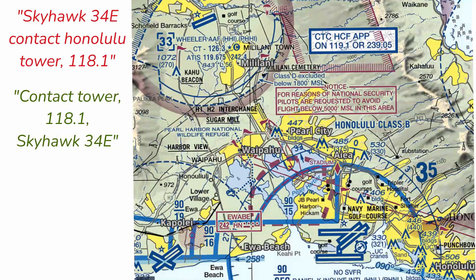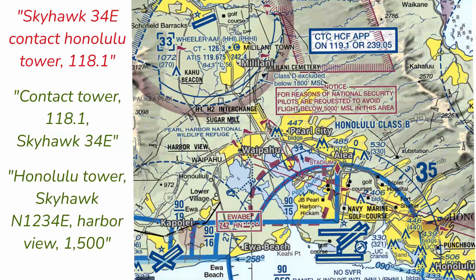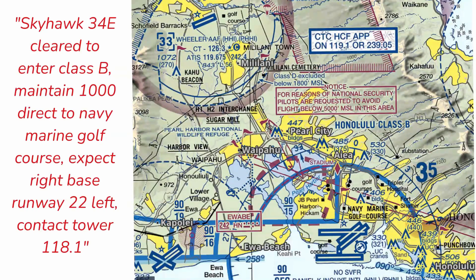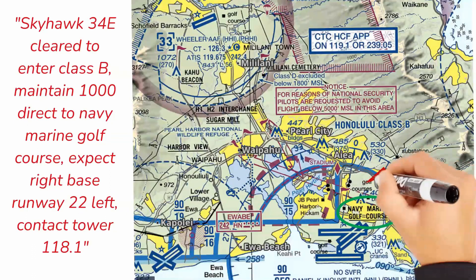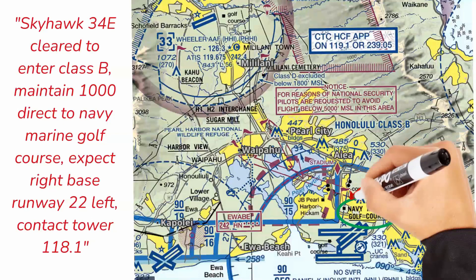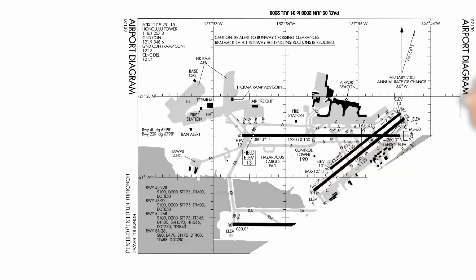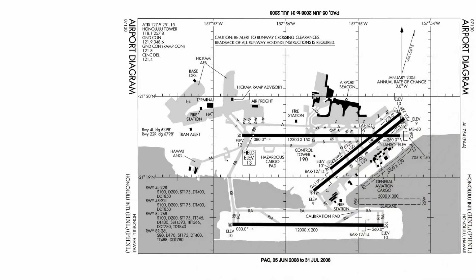My next call sounded something like this: 'Honolulu Tower, Skyhawk November 1234 Echo, Harborview, 1,500.' Remember, you have to have permission to enter Class B airspace, so the tower controller's call has to include either a restriction to stay out of or permission to enter Class B airspace. Tower's call was something like: 'Skyhawk 34 Echo, cleared to enter Class B. Maintain 1,000 direct Navy Marine Golf Course. Expect right base runway 22L.' Remember, part of the preflight process is to familiarize yourself with as much information about the airport as possible — all found on the airport diagrams and the chart supplement, formerly known as the Airport Facility Directory, or AFD.